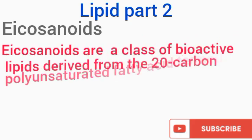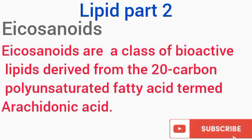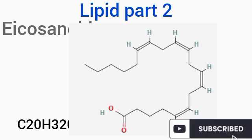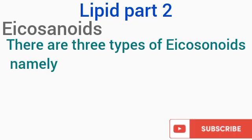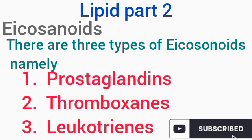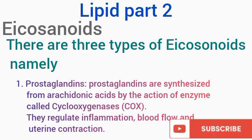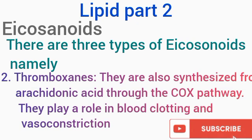The last group is eicosanoids. Eicosanoids are lipids derived from arachidonic acid. Arachidonic acid has 20 carbon polyunsaturated fatty acids. As you can see from the structure, the number of carbon atoms is 20, and polyunsaturated indicates that they have numerous double bonds. There are three main types of eicosanoids: prostaglandins, thromboxanes, and leukotrienes. Prostaglandins are synthesized from arachidonic acid by the action of cyclooxygenase, commonly called COX. Thromboxanes are also produced from arachidonic acid through the COX pathway, while leukotrienes are formed from arachidonic acid through the lipoxygenase pathway.